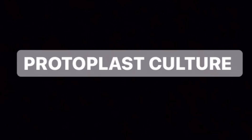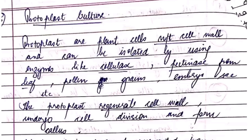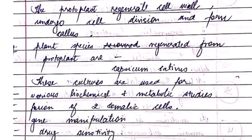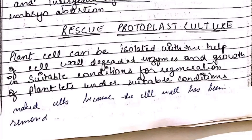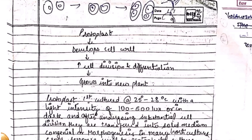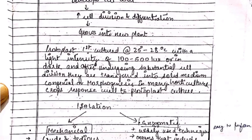The next topic is protoplast culture. Protoplasts are plant cells without the cell wall — they are naked cells surrounded by the plasma membrane. They can regenerate a cell wall, grow, and divide into a whole new plant. Plant cells can be isolated with the help of cell-wall-degrading enzymes and grown in suitable conditions for regeneration of plantlets. A flowchart shows the protoplast developing a cell wall, undergoing cell division, and ultimately growing into a new plant.